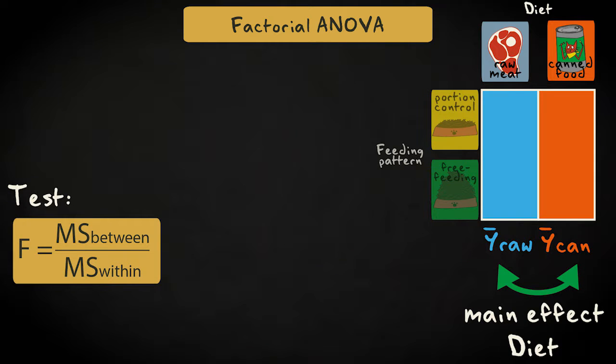This is referred to as checking the main effect of diet. We can test whether the mean health scores differ between the two diets, using the same principle as in one-way analysis of variance, by estimating the between and within-group variance, and seeing whether the between-group variance is larger, indicating a difference in the means.